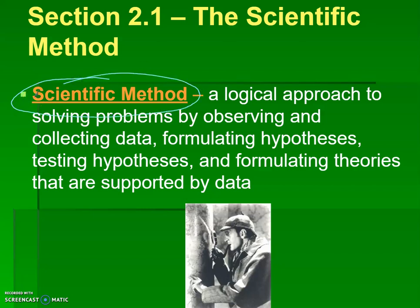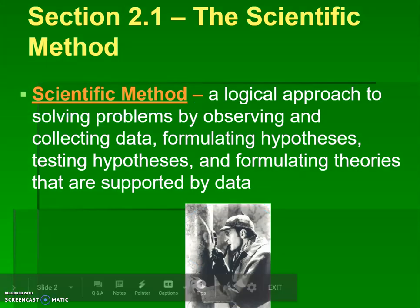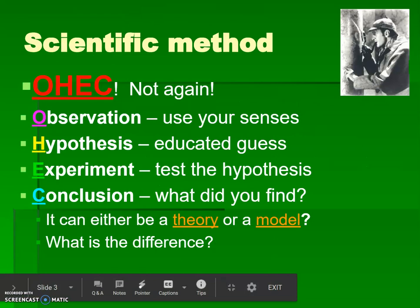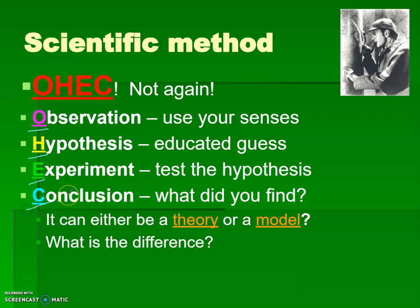It's that logical approach to looking at a problem. You observe your data, you form your hypothesis, and make conclusions surrounding and supporting what you observed. So Sherlock Holmes definitely implemented the scientific method. The acronym is OHEC: O is for observation, H is for hypothesis, E is for experiment, and C is for conclusion — four major parts.